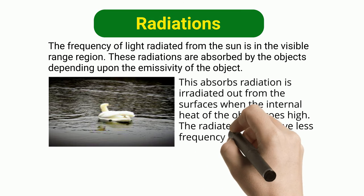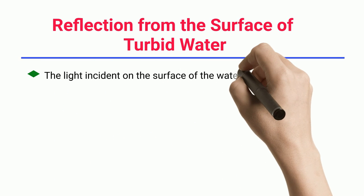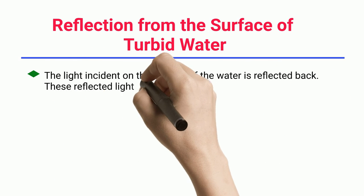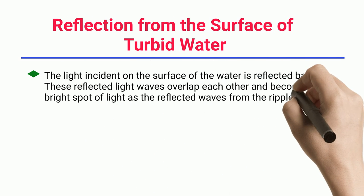Reflection from the surface of turbid water: The light incident on the surface of the water is reflected back. These reflected light waves overlap each other and become a bright spot of light as the reflected waves from the ripples formed on the water surface coincide.